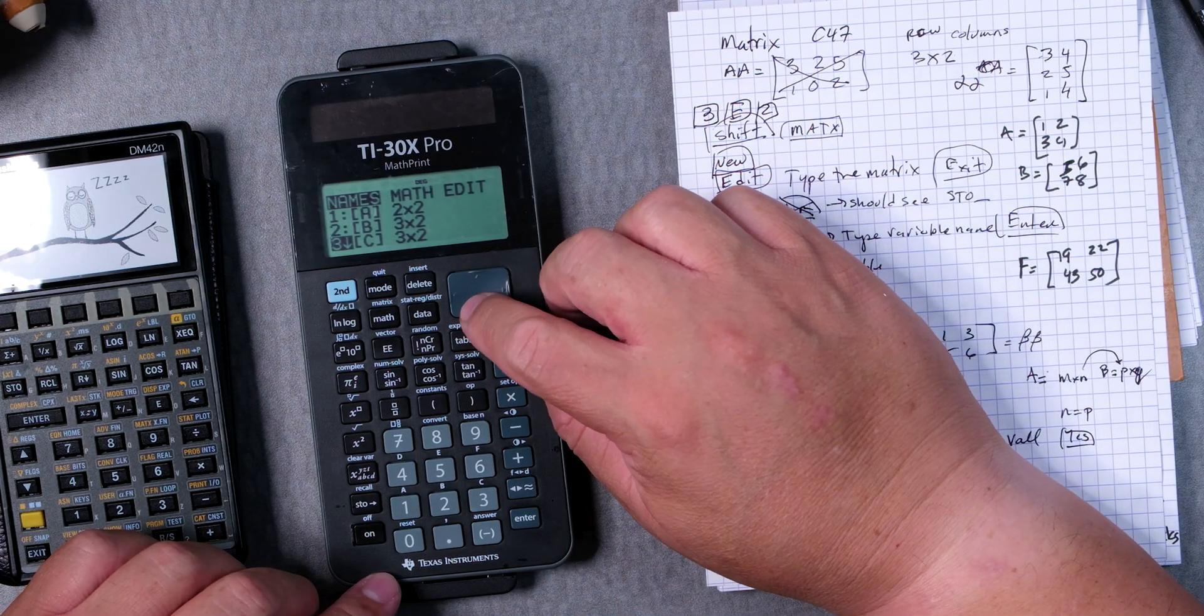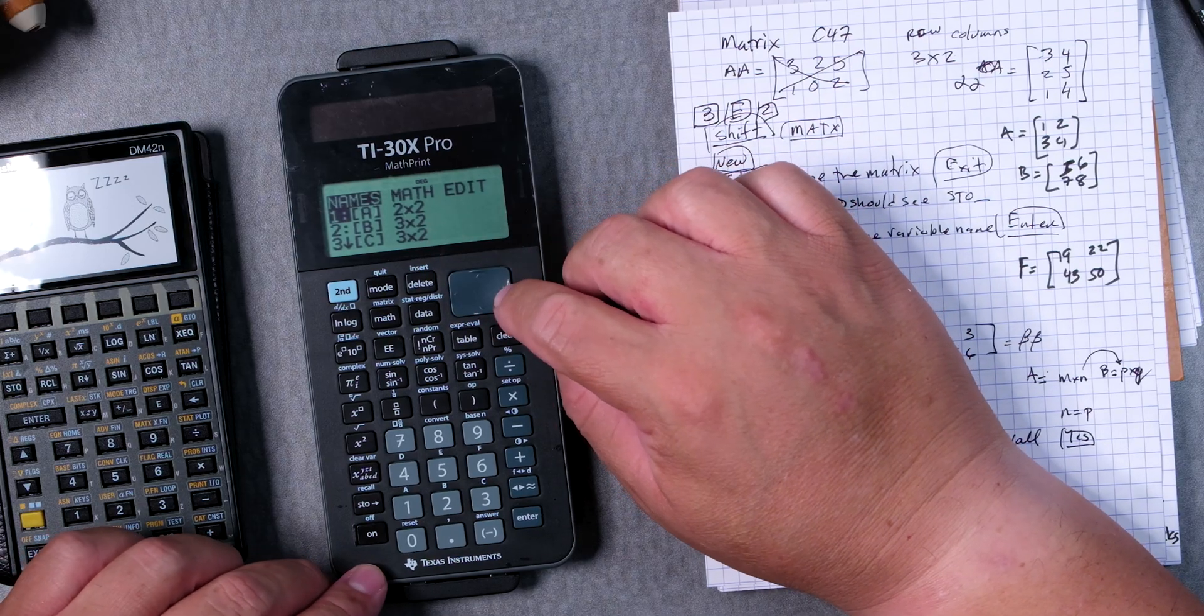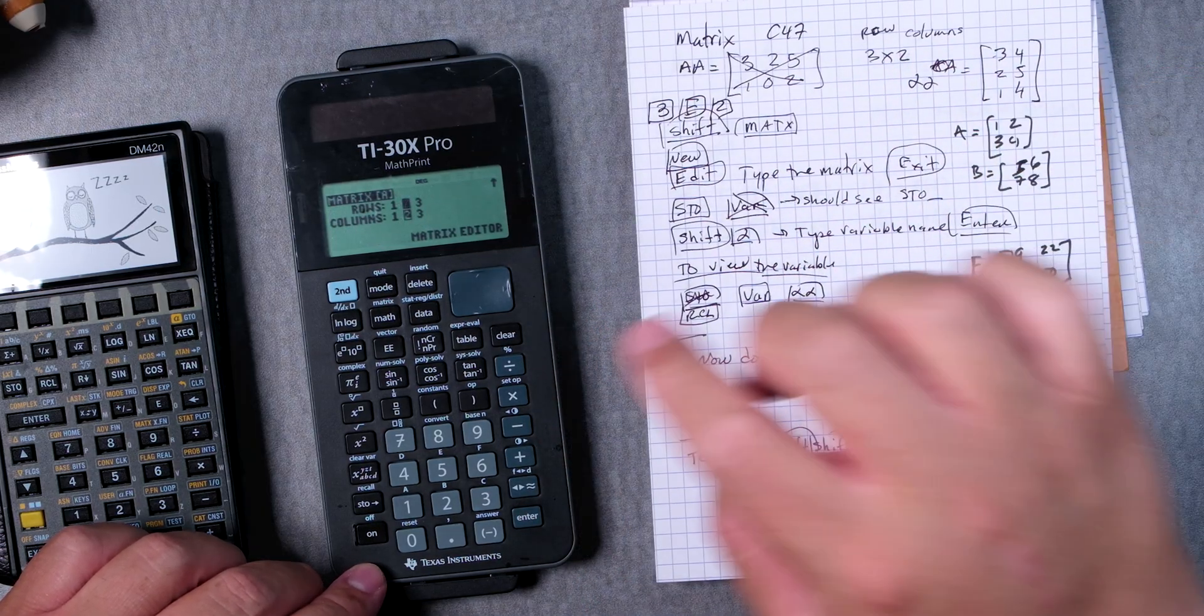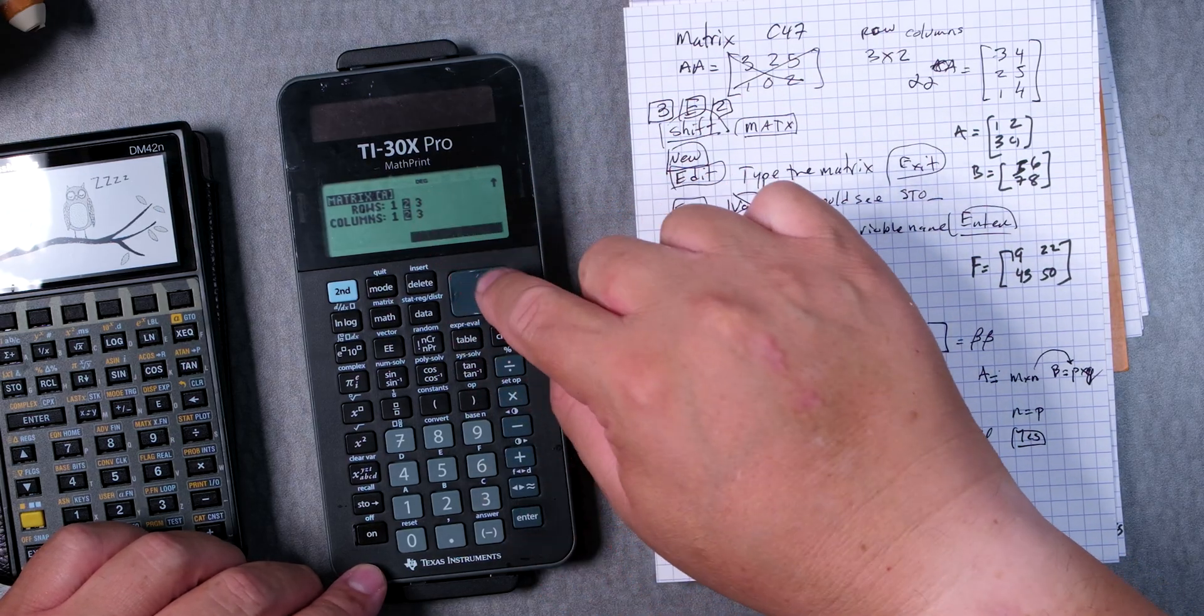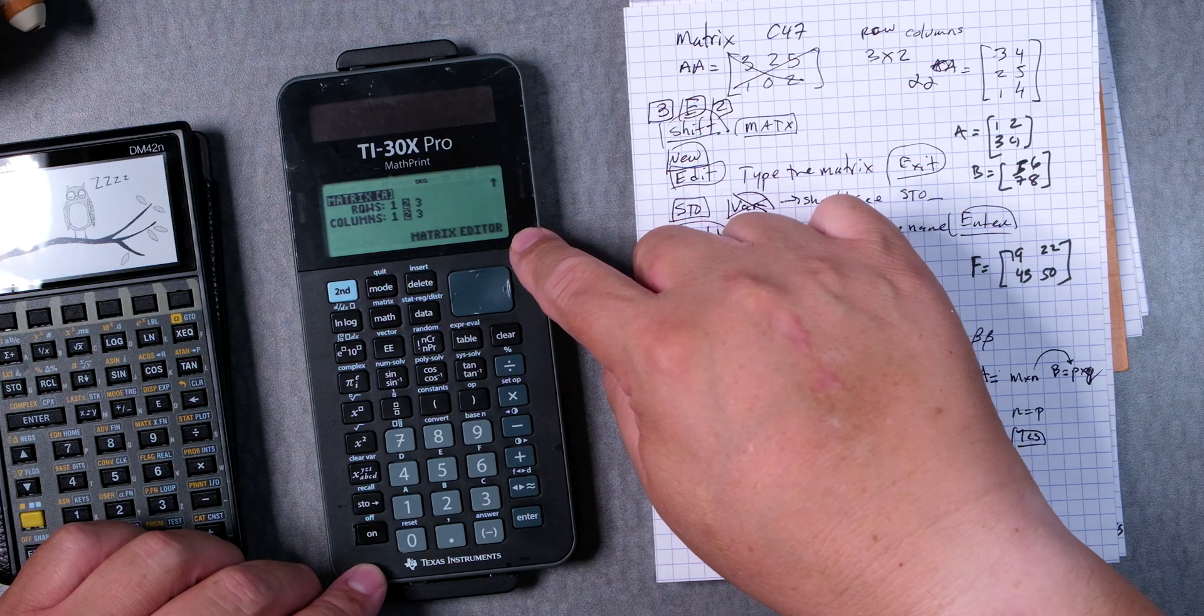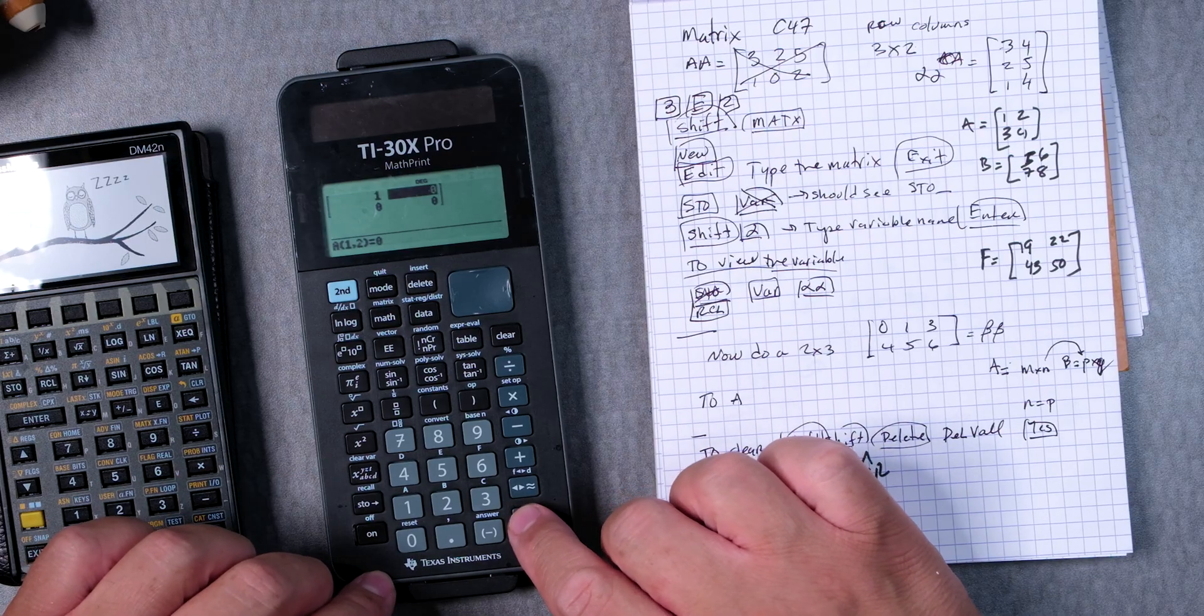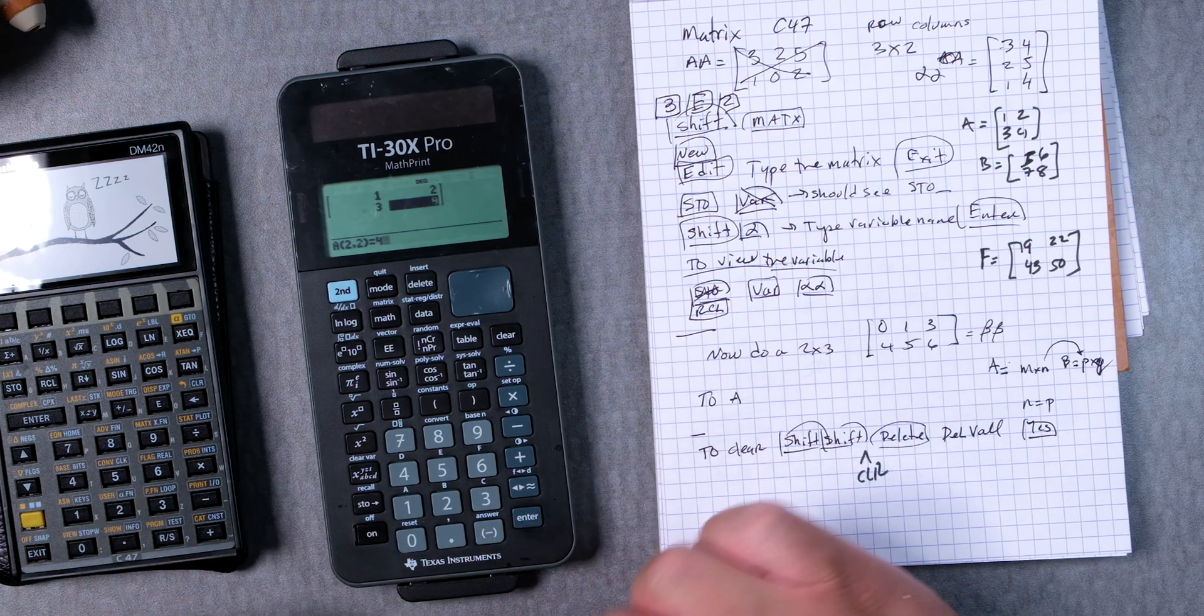This might be filled out, maybe it is, maybe it isn't. What you want to do is go to matrix A, go across all the way to edit, and then we're going to enter a two by two matrix - two rows, two columns. Then we're going to go all the way down to the editor. Right now it's zeros. If there are some numbers we're going to have to change those numbers. But we're going to type one enter, two enter, three enter, four enter, and we got it.